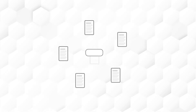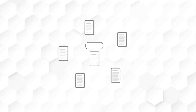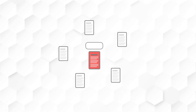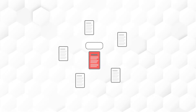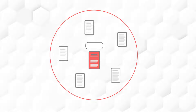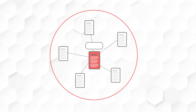Now, within each category there should be one most important page. It could be the category page itself, or it could be a separate page. Basically, this should be the most important page in the category that aligns with your business goals. All the other pages in the same topic cluster will have internal links pointing to this page, and this page is what we call the pillar content.